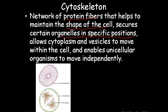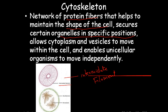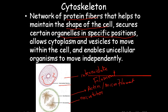The cytoskeleton has three types of fibers: actin filaments (also called microfilaments), intermediate filaments, and microtubules. Together these form the cytoskeleton structure inside the cell.